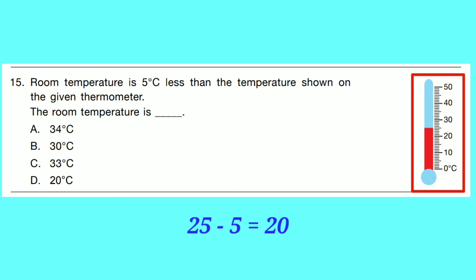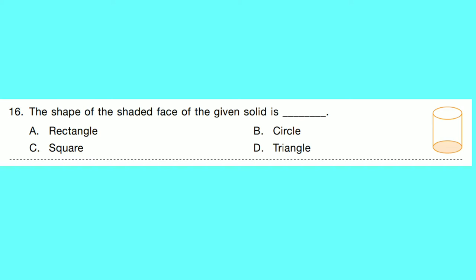Question number 16: The shape of the shaded face of the given solid is dash. This is a circle. So the shaded face is a circle. Option B is correct.